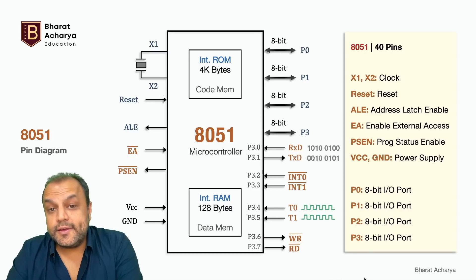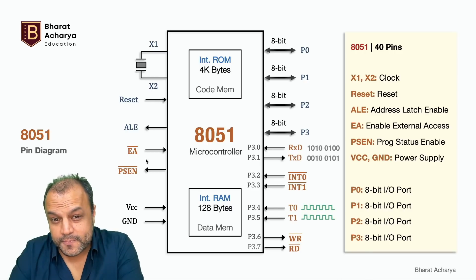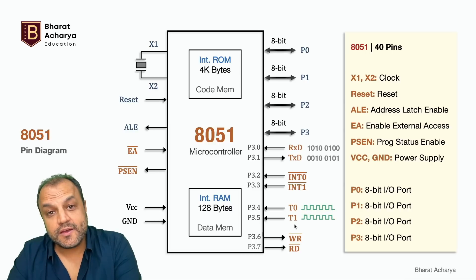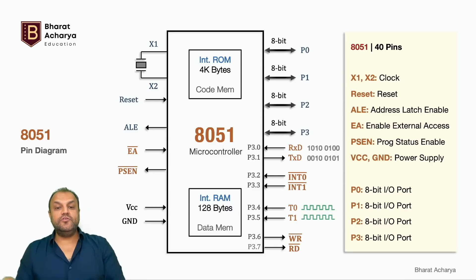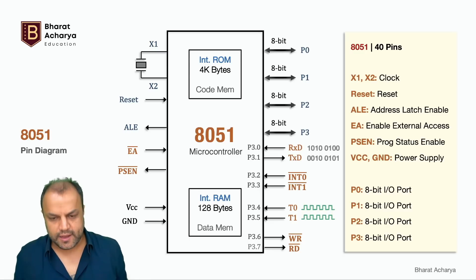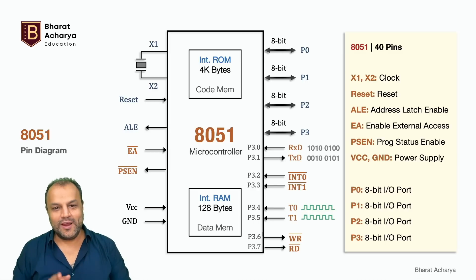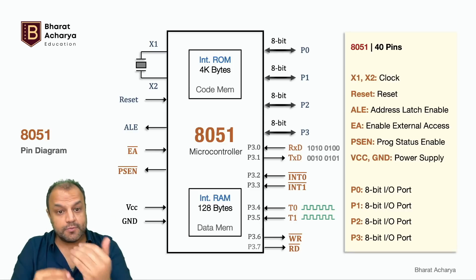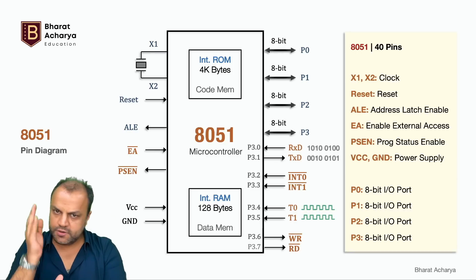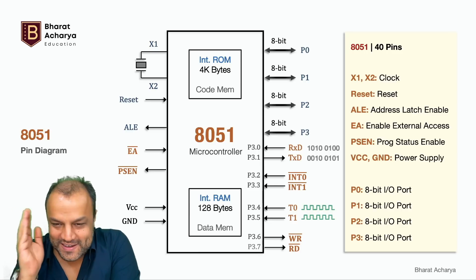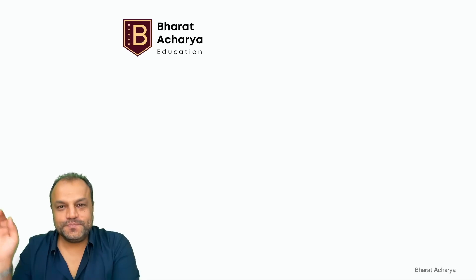Finally, the read and write signals are used to connect external RAM. If you connect external ROM, EA bar and PSEN bar come into picture; if you connect external RAM, the read and write signals come into picture. You may connect both, so both sets of signals will come into picture as you build your system. That covers all 40 pins with their alternate uses — I haven't explained them in depth yet; that comes next, one by one.